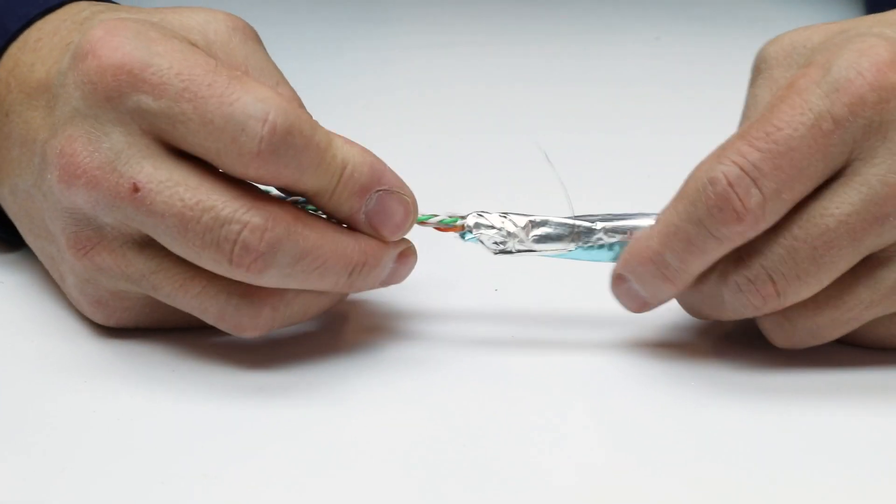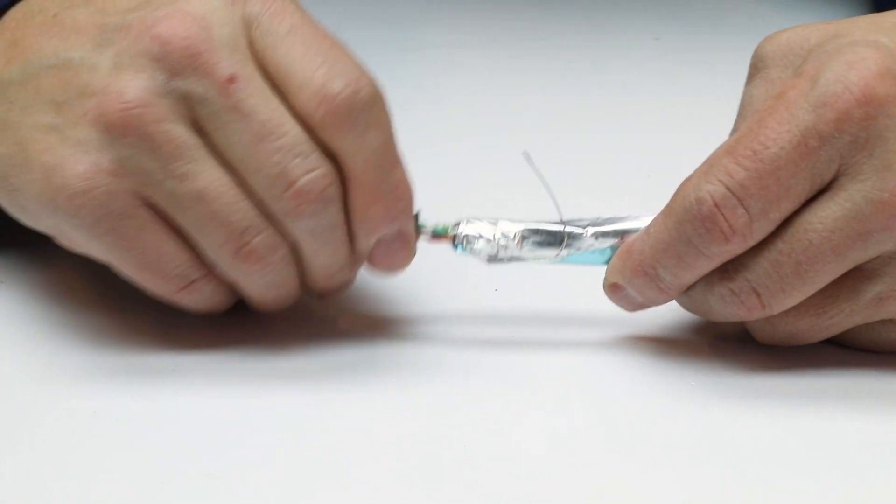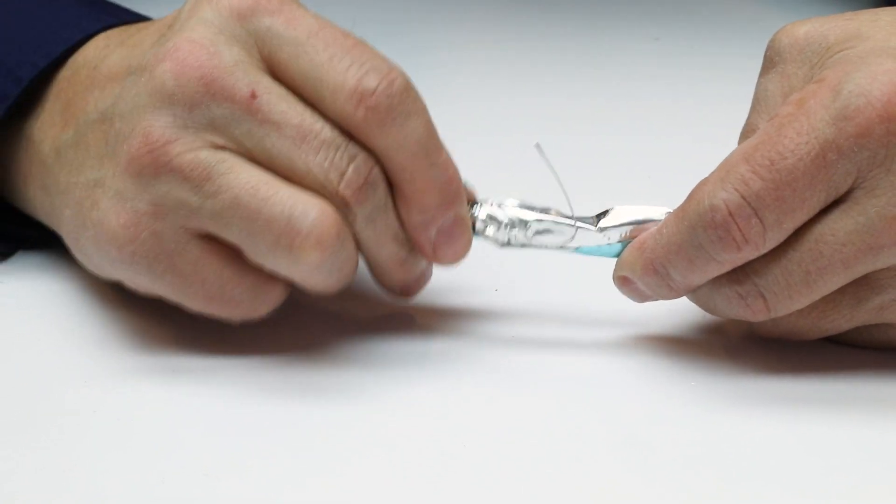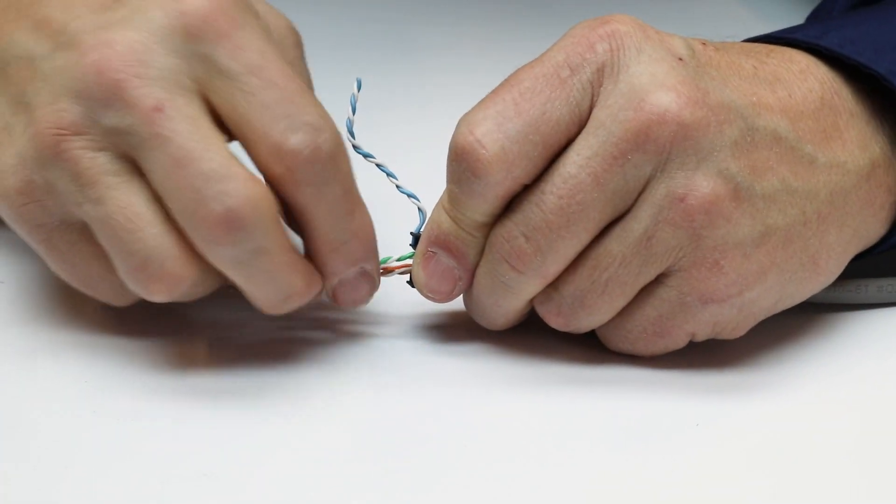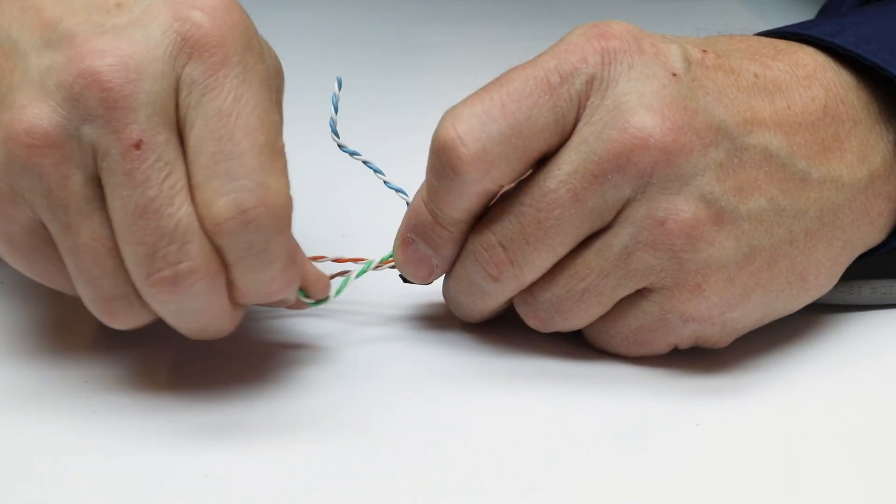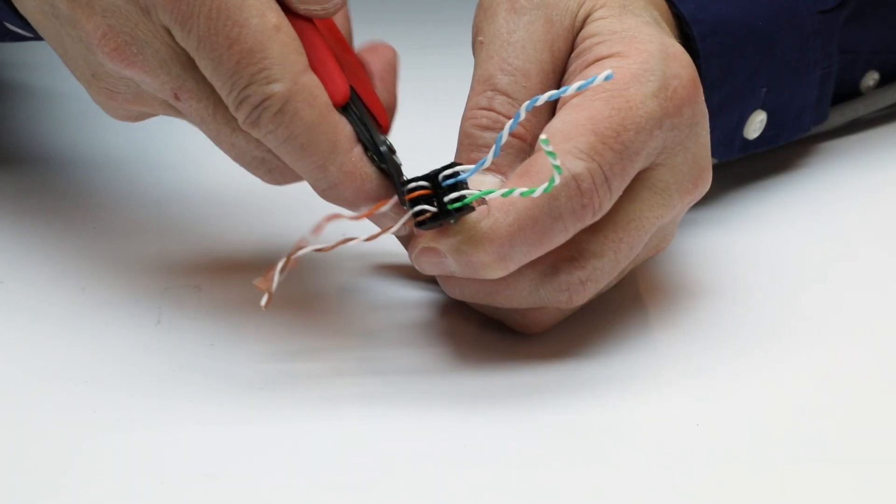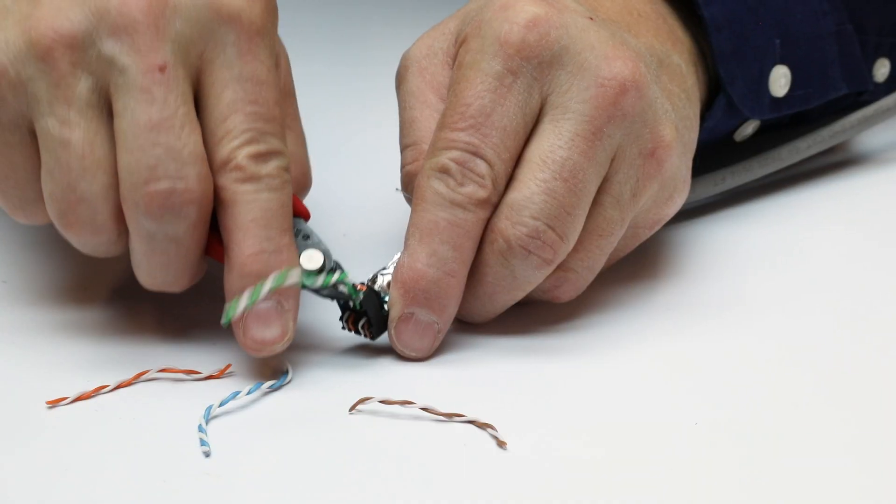Thread the pairs into the wire manager per the T568A or T568B wiring pattern. Observing pair polarity, pull each wire into its proper slot in the wire manager. Trim all wires flush with the sides of the wire manager.